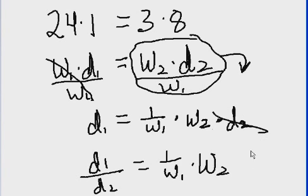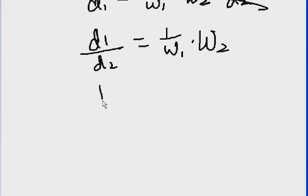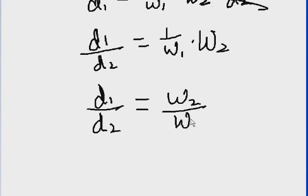1 over w1 times w2. And I divide it by d2, so he's gone. Let's rewrite this now: d1 over d2 equals w2 over w1. Because when I multiply these two guys, that's what I essentially have.